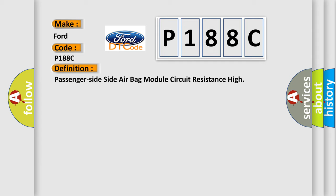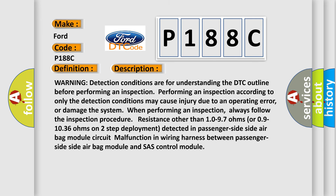The basic definition is: Passenger Side Side Airbag Module Circuit Resistance High. Warning detection conditions are for understanding the DTC outline before performing an inspection. Performing an inspection according to only the detection conditions may cause injury due to an operating error, or damage the system. Always follow the inspection procedure. Resistance other than 10 to 97 ohms or 9 to 1036 ohms on two-step deployment detected in Passenger Side Side Airbag Module Circuit — malfunction in wiring harness between Passenger Side Side Airbag Module and Chassis Control Module.